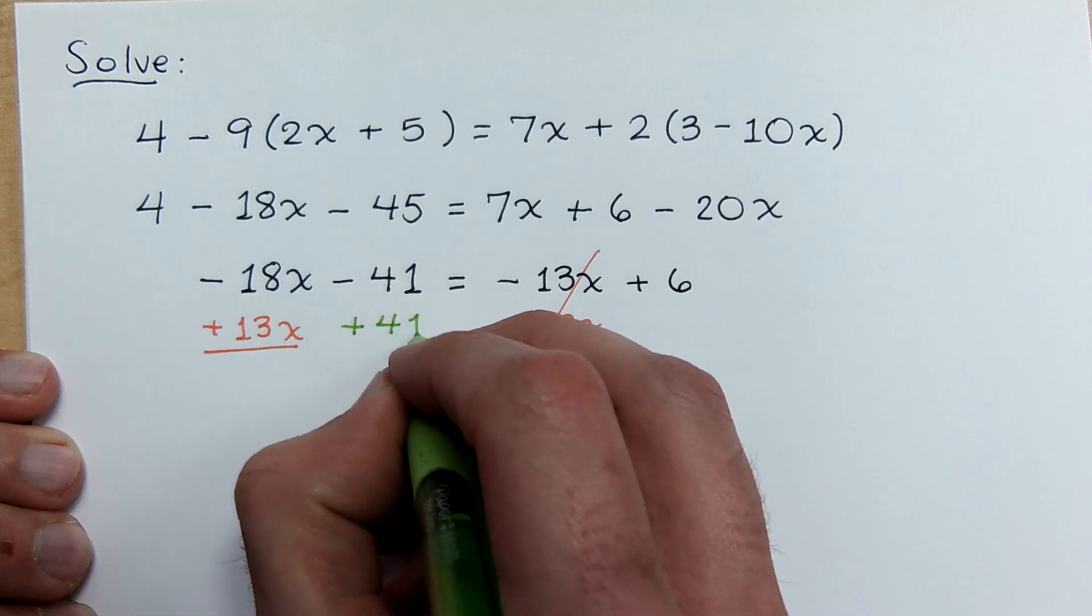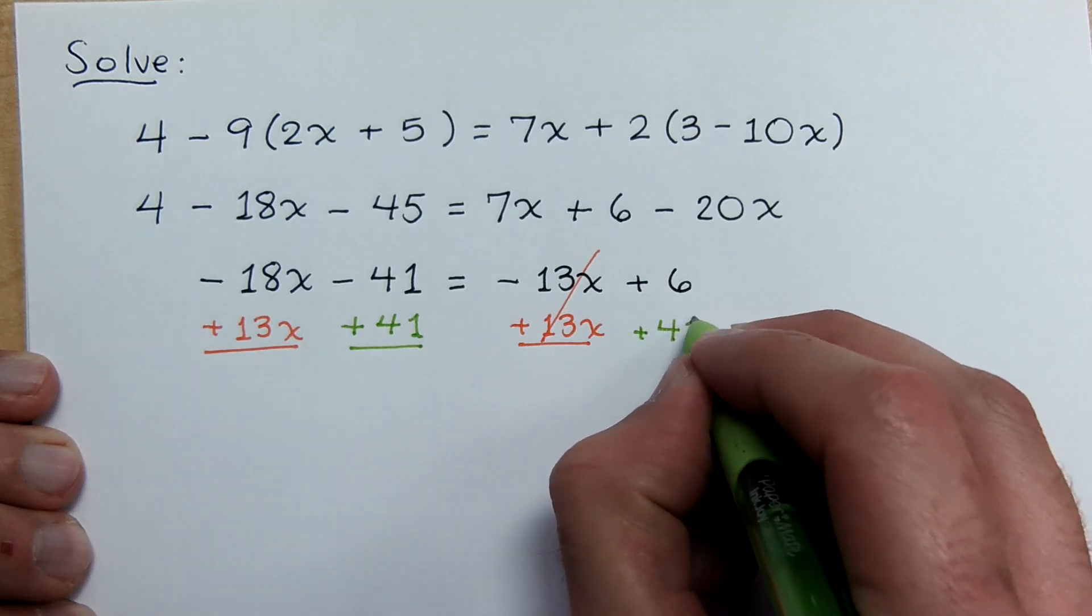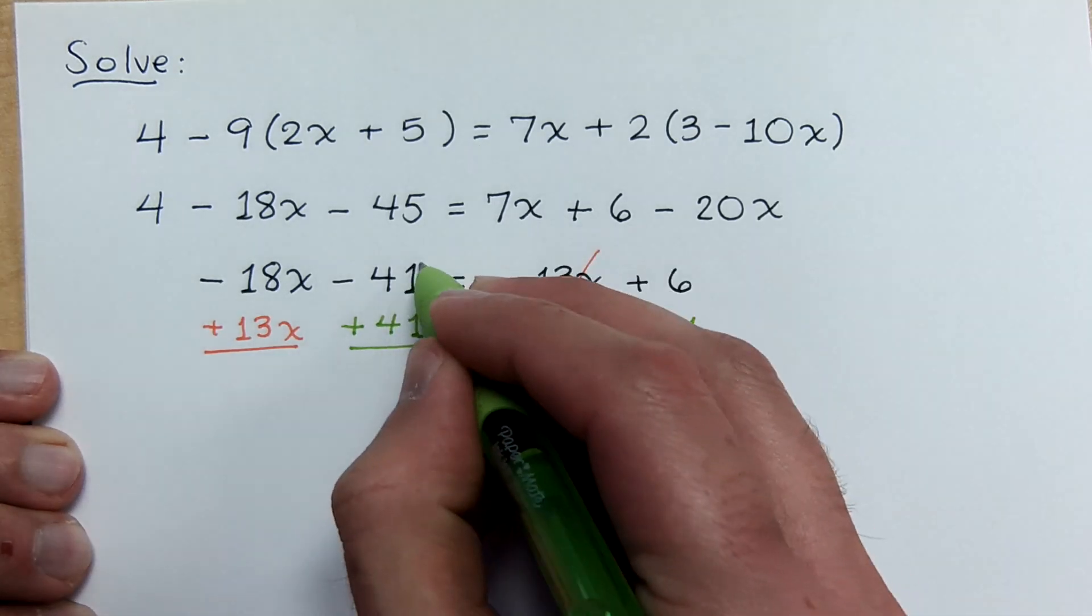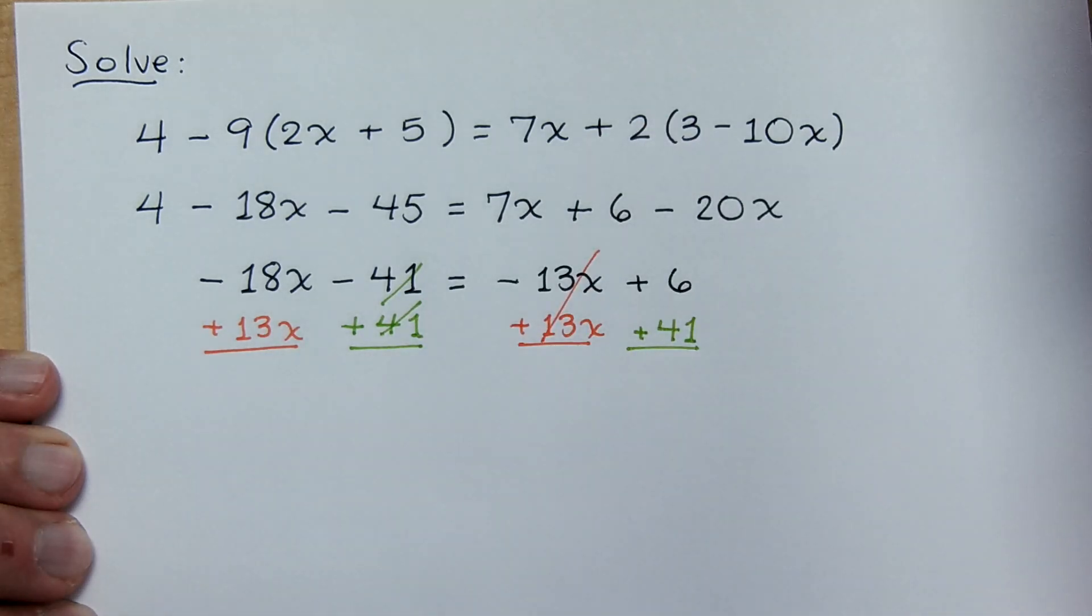And now I'm going to move the constant term to the other side. That's right, add 41. Are you proud of yourself? Oh, sorry. I think that broke the rule. Too loud. What do we have now for our equation?